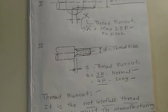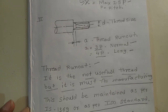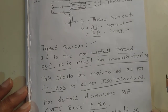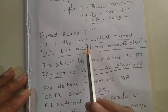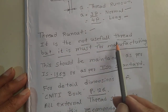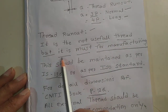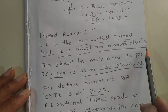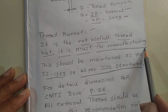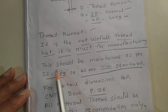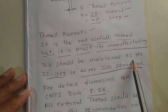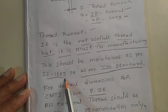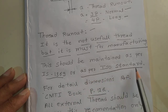Regarding Thread Runout from a definition point of view, it is not a useful thread, but it is a must for manufacturing. This should be maintained as per IS 1369 or as per ISO Standard.